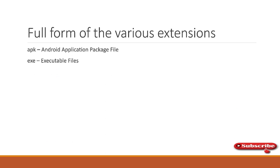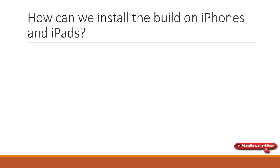We need to know a few full forms when working on mobile applications. APK stands for Android Application Package — the package extension for Android apps. IPA stands for iOS App Store Package, for Apple phones. ADB stands for Android Debug Bridge. For installing builds on iPhones and iPads, unlike Android where you can directly install an APK, you need to use iTunes to install the IPA file, as it cannot be installed directly.